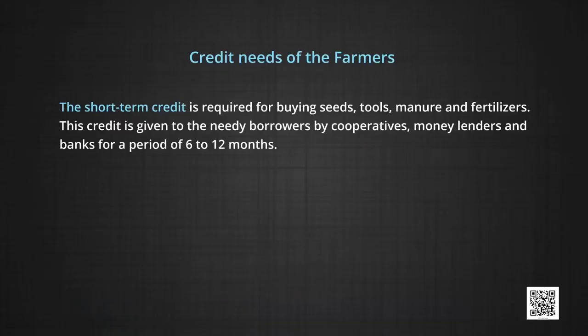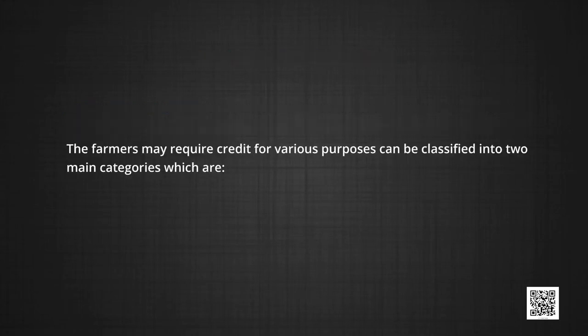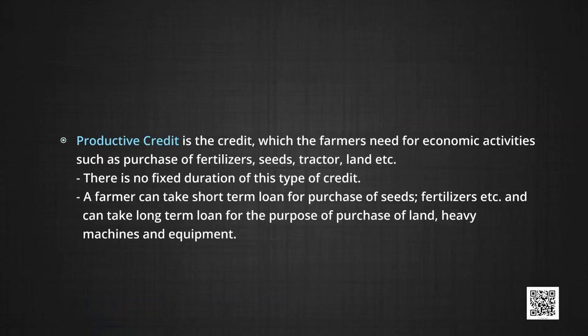Finally, short-term credit is required for buying seeds, tools, manure and fertilizers. This credit is given to needy borrowers by cooperatives, money lenders and banks for a period of 6 to 12 months. The farmers' credit requirements can also be classified into two main categories: productive credit, which is the credit farmers need for economic activities such as purchase of fertilizers, seeds, tractor, land, etc. There is no fixed duration of this type of credit — a farmer can take a short-term loan for purchase of seeds and fertilizers, or a long-term loan for purchase of land, heavy machines and equipment.